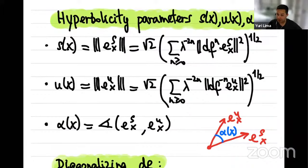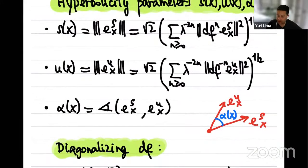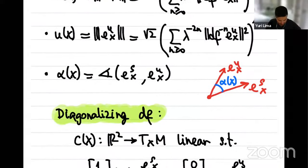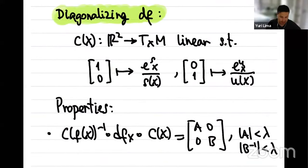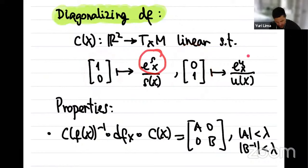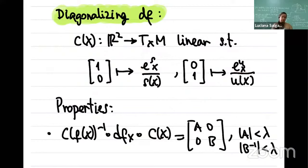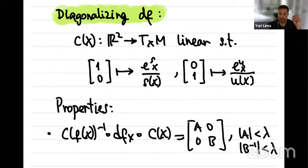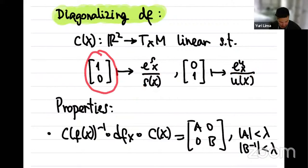These concepts allow us to represent our map like a hyperbolic matrix. We first represent the derivative of the map as a uniform hyperbolic matrix by diagonalizing it using a linear change of coordinates given by a matrix C(x). The matrix C sends the canonical basis to the basis of the eigendirections ES and EU, weighted by S and U. Whenever you have bad hyperbolicity, S will be big and you send the unit vector to a very tiny vector — and the same for EU.